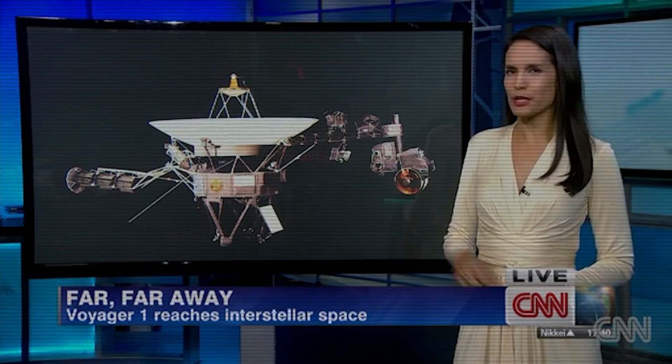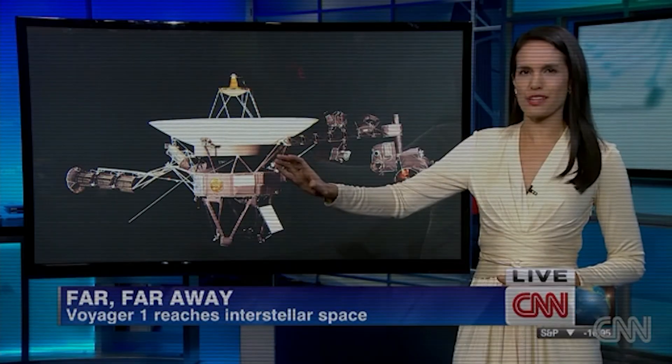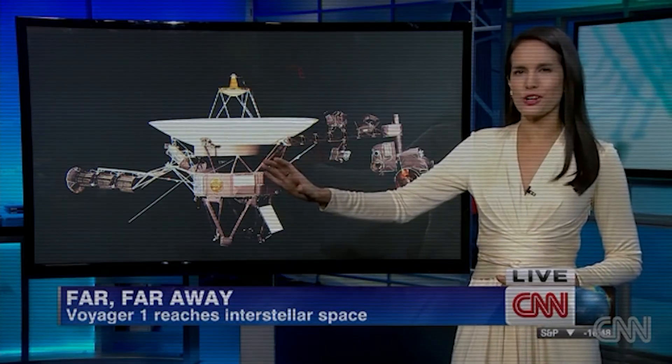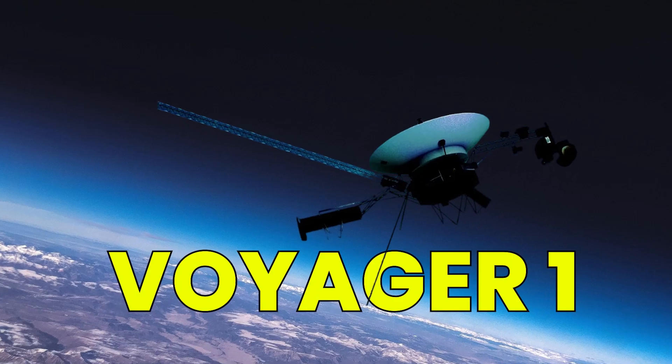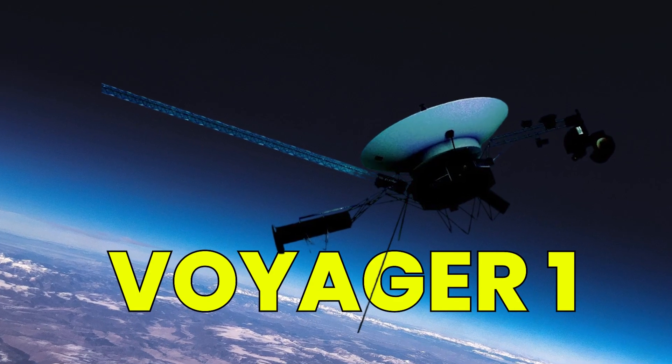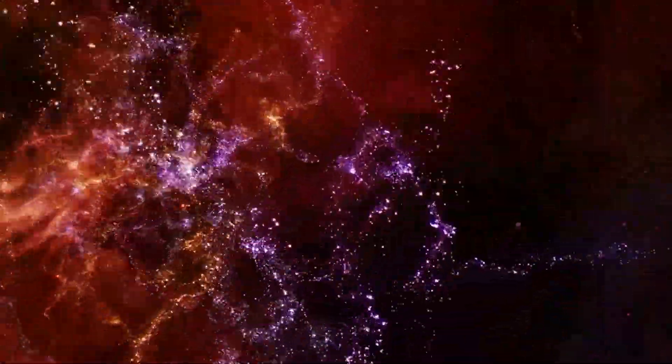NASA says that Voyager 1 has become the first man-made object to reach interstellar space, the cold, dark region between stars. Launched from Cape Canaveral in Florida on September 5, 1977, Voyager 1, the most distant human-made object from Earth, has just done the unimaginable—made contact with an unknown force in the outer reaches of space.